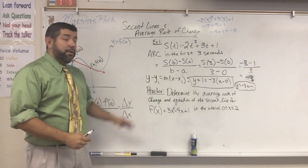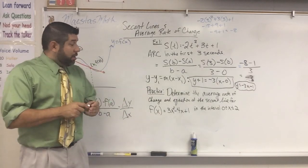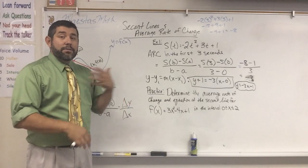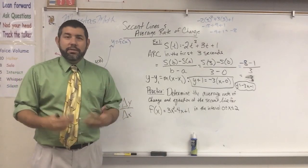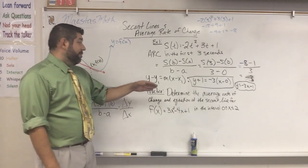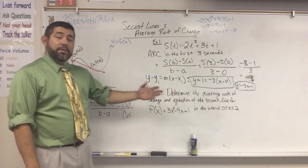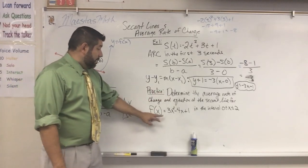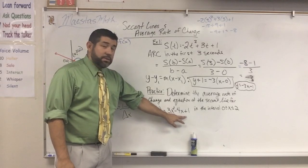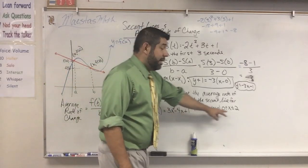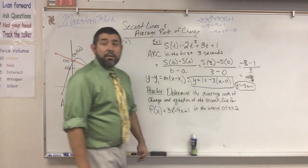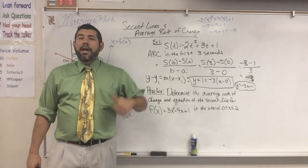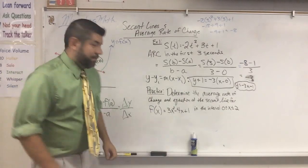Here is a practice problem for you. Go ahead and do it, then I'll come back and work it out so you can check your answer. Determine the average rate of change and the equation of the secant line of f of x equals three x squared minus four x plus one on the interval x between zero and two. You might want to pause this now — I'm going to erase the board and then do the solution.